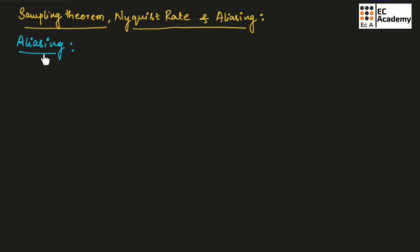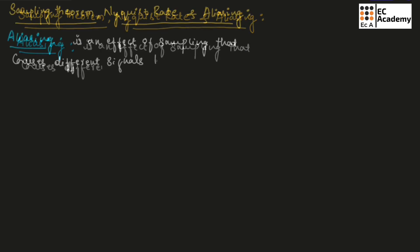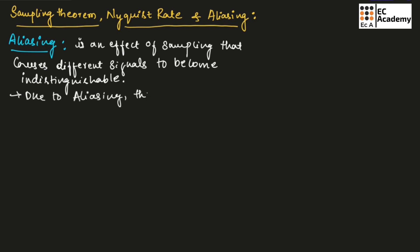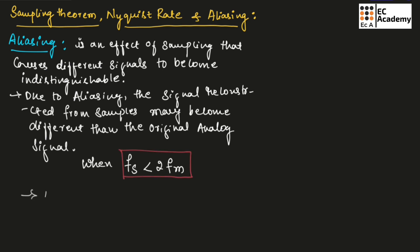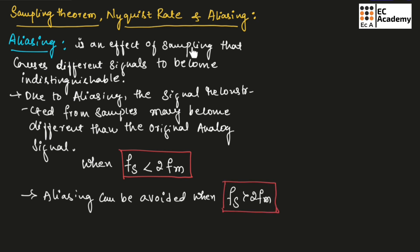Now let us understand aliasing. Aliasing is an effect of sampling that causes different signals to become indistinguishable. Due to aliasing, the signal reconstructed from samples may become different than the original analog signal. Aliasing will occur when the sampling frequency is less than 2Fm, and aliasing can be avoided when Fs is greater than 2Fm.